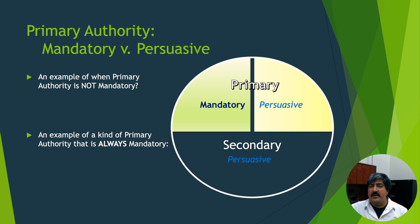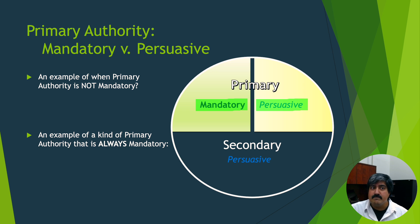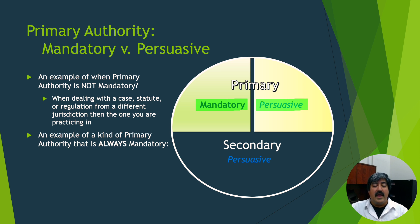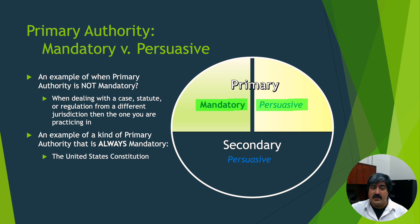Going back to primary authority — remember, primary authority may be either mandatory or persuasive. An example of when primary authority is not mandatory is when you have a case, statute, or regulation from a separate jurisdiction than the one you're practicing in. For instance, does a Texas court really care what Colorado has to say about driving under the influence? No, and Hawaii doesn't necessarily care about what Texas has to say about it. An example of primary authority that is always mandatory is the U.S. Constitution.